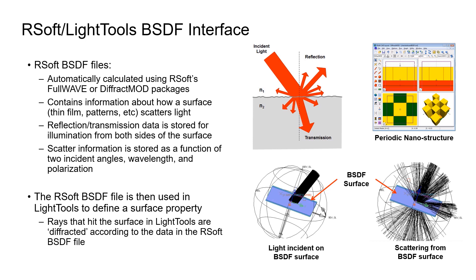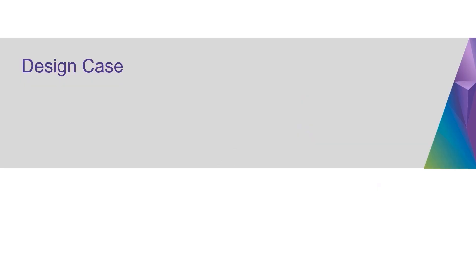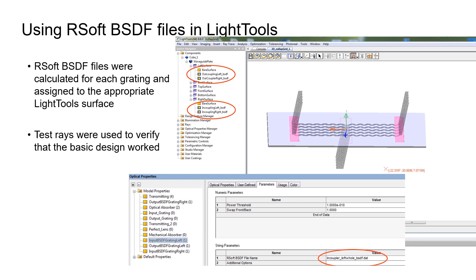When rays are in LightTools hitting a surface, they will find their path according to the BSDF. In this example, diffractive properties of these two gratings are calculated by Diffract MOD RCWA, and for this grating, we calculate using FullWAVE FDTD just for comparison. We export these properties into LightTools here. As you can see, the light is coupled in and propagates in the planar waveguide, and at the end of the waveguide, it is coupled out of the glass plane.